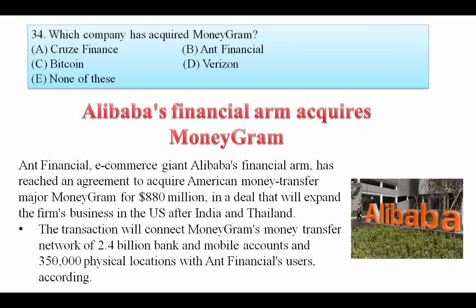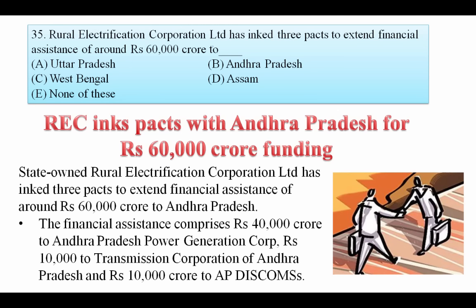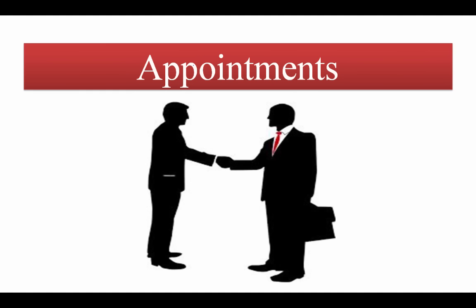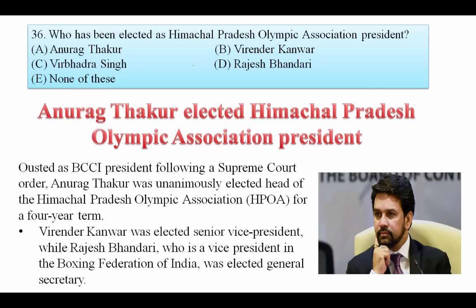Which company has acquired MoneyGram? Alibaba's financial arm has acquired MoneyGram. The name of that arm is Ant Financial. Rural Electrification Corporation Limited has signed a pact to extend financial assistance of around rupees 60,000 crore to the Andhra government. Your answer is B.